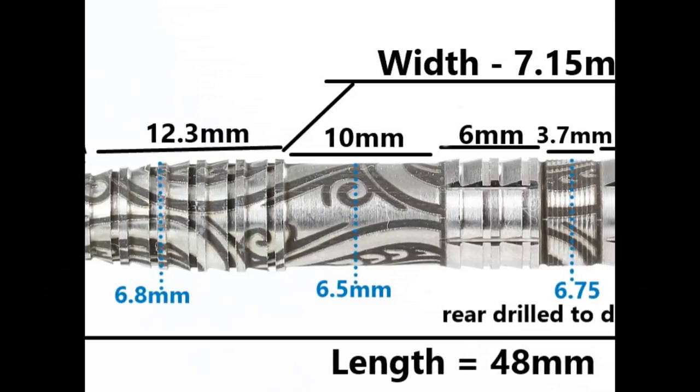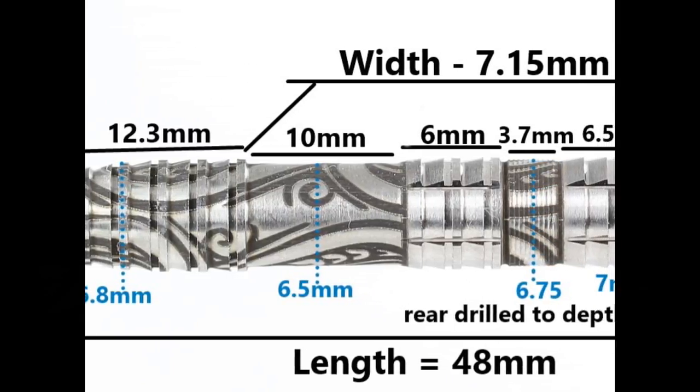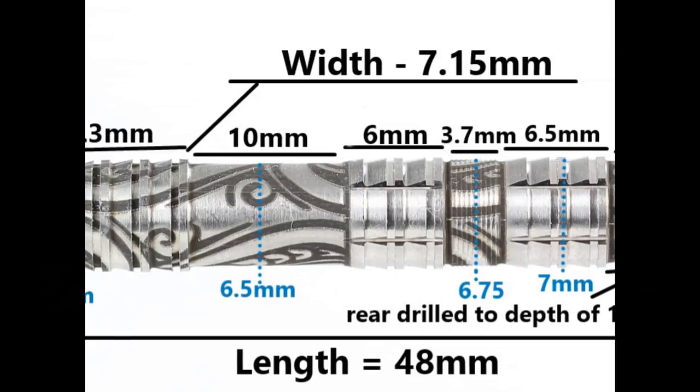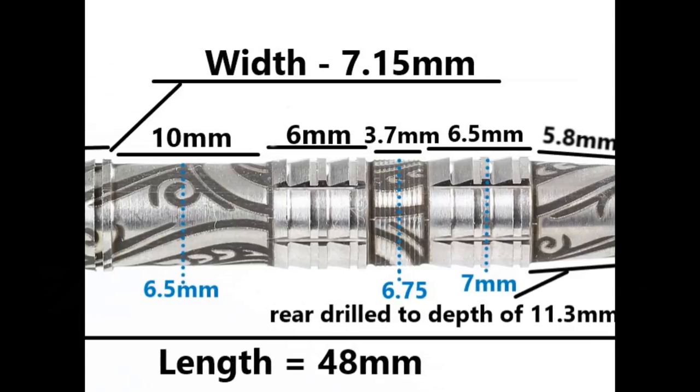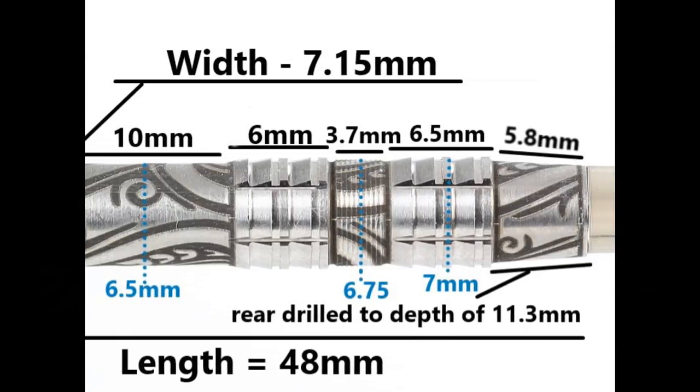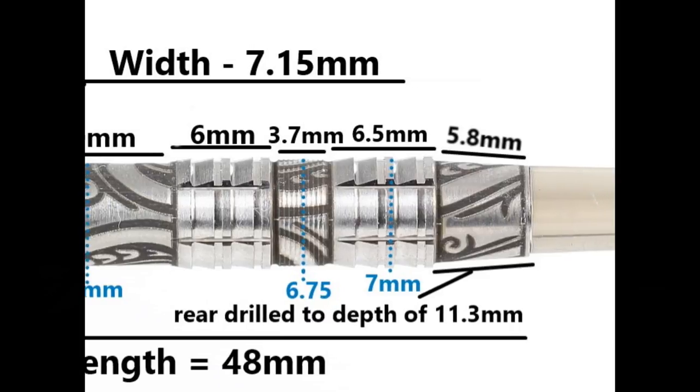Then you've got a small section of micro grip of 3.7 millimeters, then more of the shark and ring grip with the lateral cuts of 6.5 millimeters and then a smooth section at the end of 5.8 millimeters. The length is 48 millimeters and the width is 7.15 millimeters.